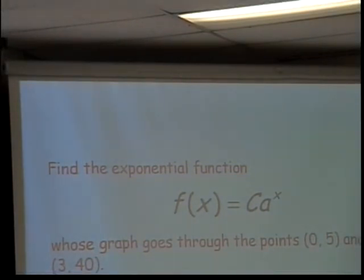The simple exponential function we're going to talk about building today is going to be some number times A to the X. When I am done, I need to have the number for C and the number for A. The X gets to stay. We need this graph to go through 0, 5, and also through 3, 40. Any suggestions for how I figure out C and A?